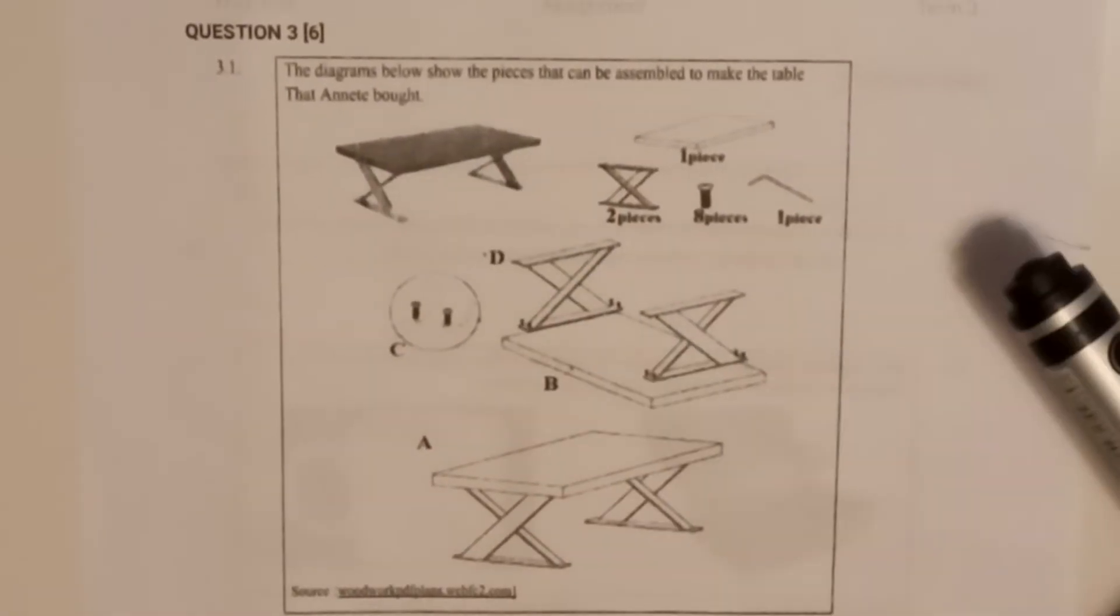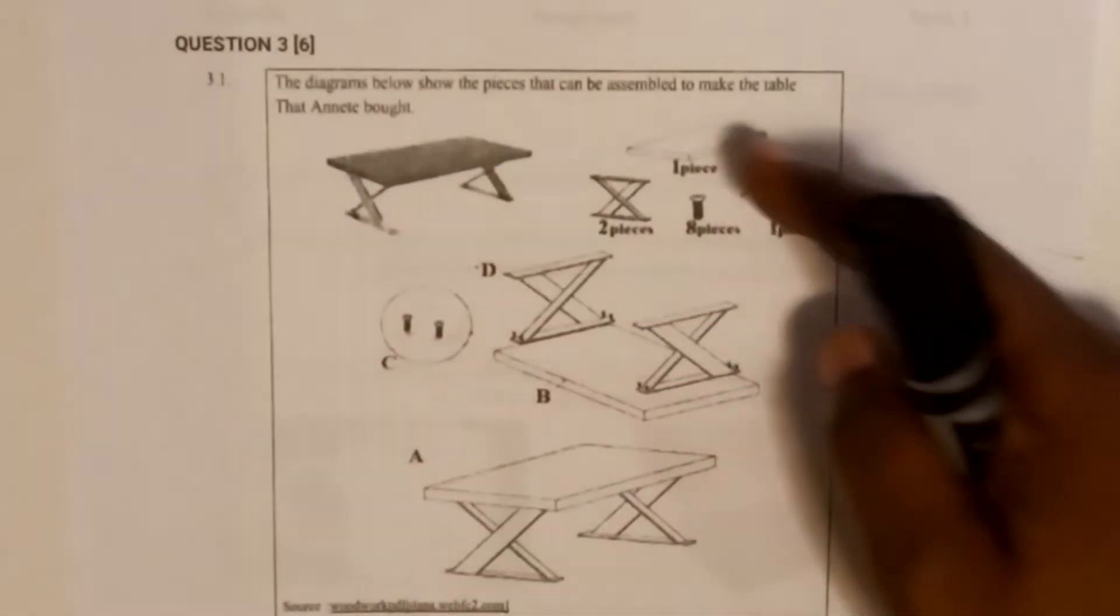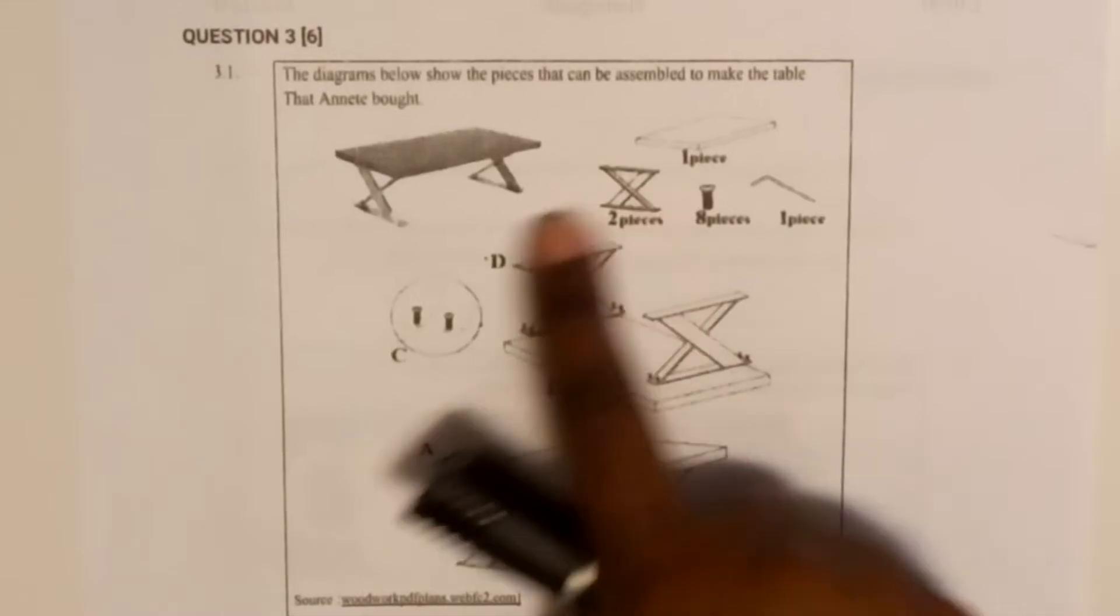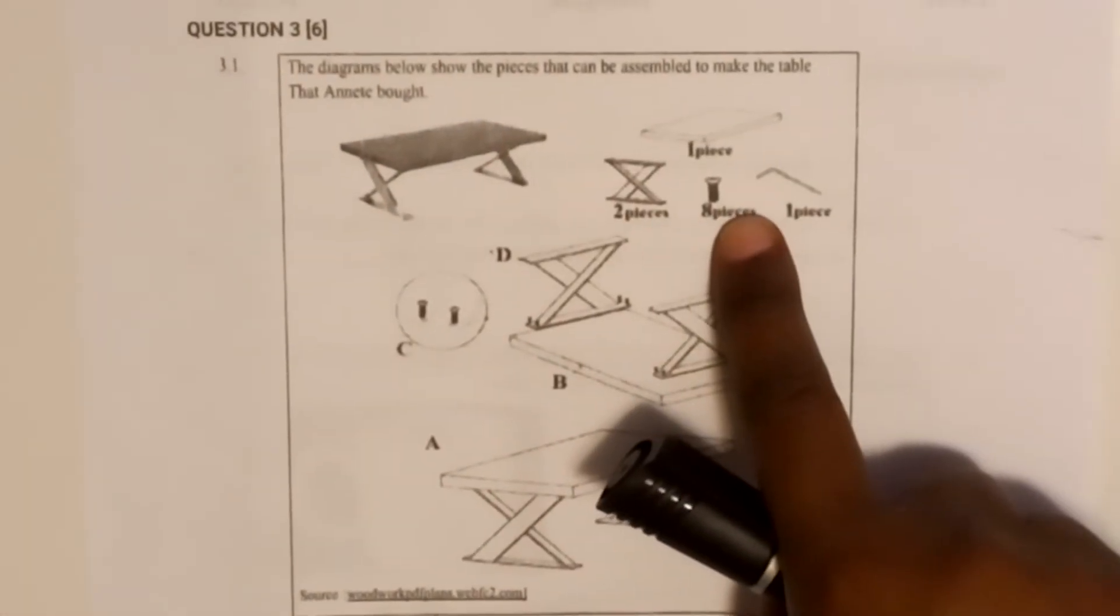You see this black part is the top of the table - that's one piece, only one top part. And then there are legs. When you look at this table it has two legs, so here they've given the instruction that there are two legs. And then there are the pins, the screws - there are eight screws.